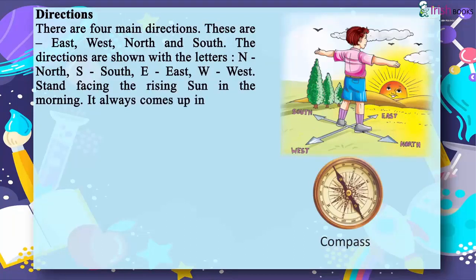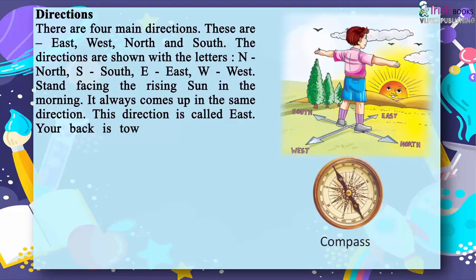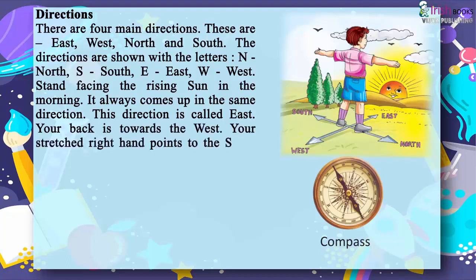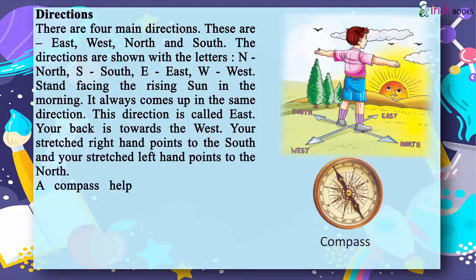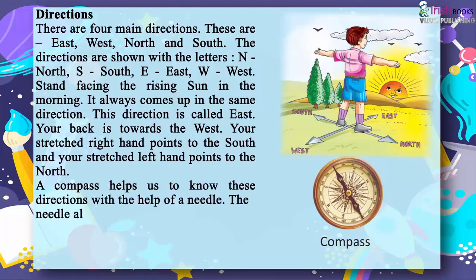Stand facing the rising sun in the morning — it always comes up in the same direction, called East. Your back is towards the West. Your stretched right hand points to the South and your stretched left hand points to the North. A compass helps us to know these directions with the help of a needle, which always points to the North.